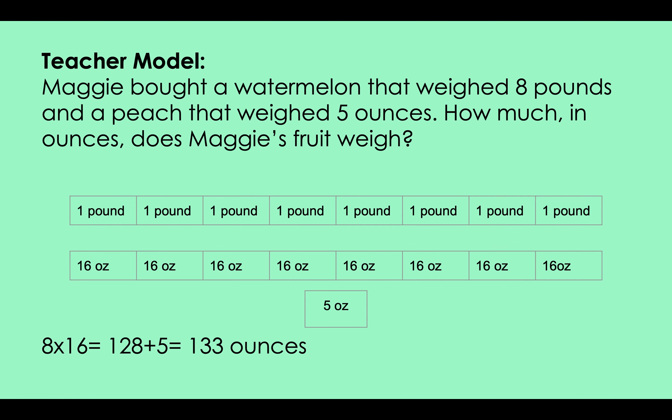Maggie bought a watermelon that weighed eight pounds and a peach that weighed five ounces. How much in ounces does Maggie's fruit weigh? So first I know that her watermelon is in pounds and her peach is in ounces.